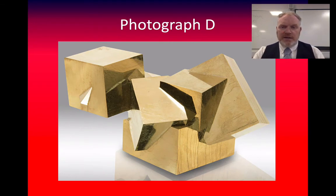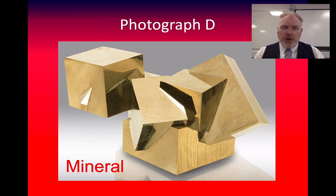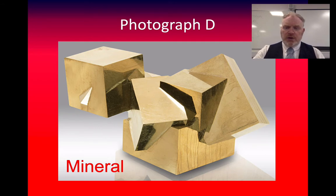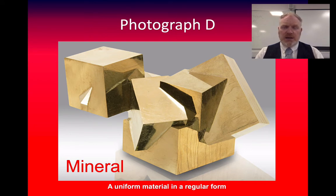Photograph D looks like it's been sculpted, like it's been made artificially, but it's not — this is a natural form. This is actually a mineral, and this particular mineral is pyrite. It's a different form from the one we saw in the practical, but we can get these beautiful perfect cubic crystals of pyrite growing across each other. The thing that makes this a mineral is that it's uniform all the way through. These cubic crystals are one of the key features we can see in some examples of pyrite.